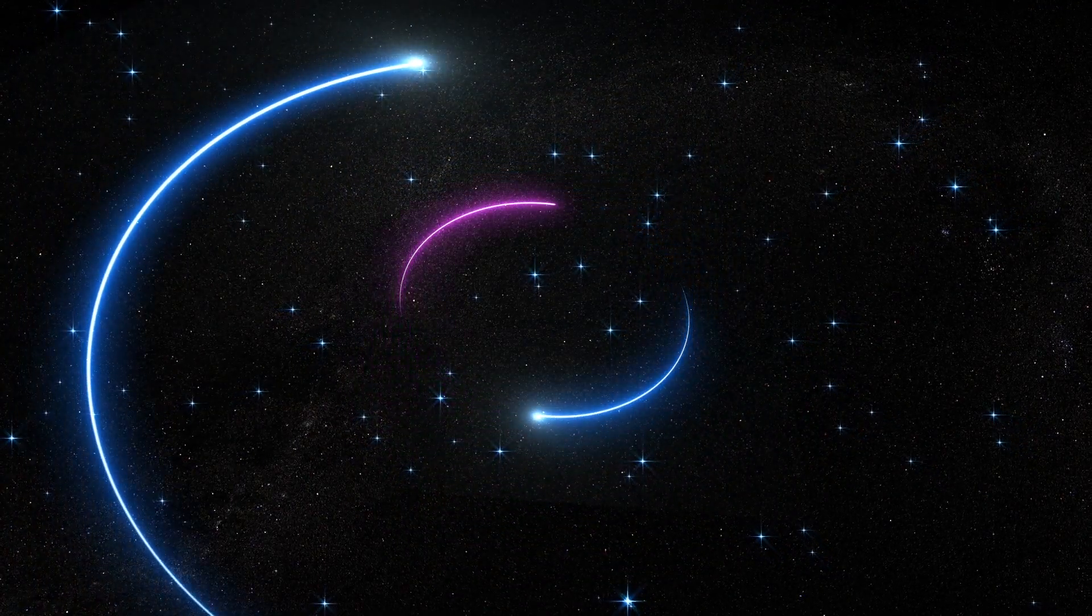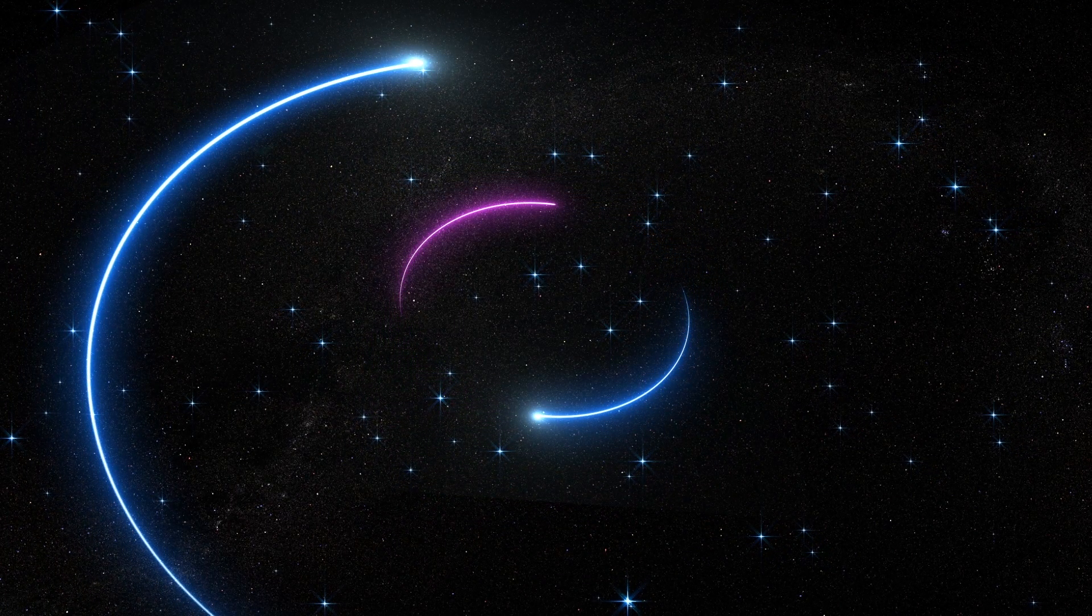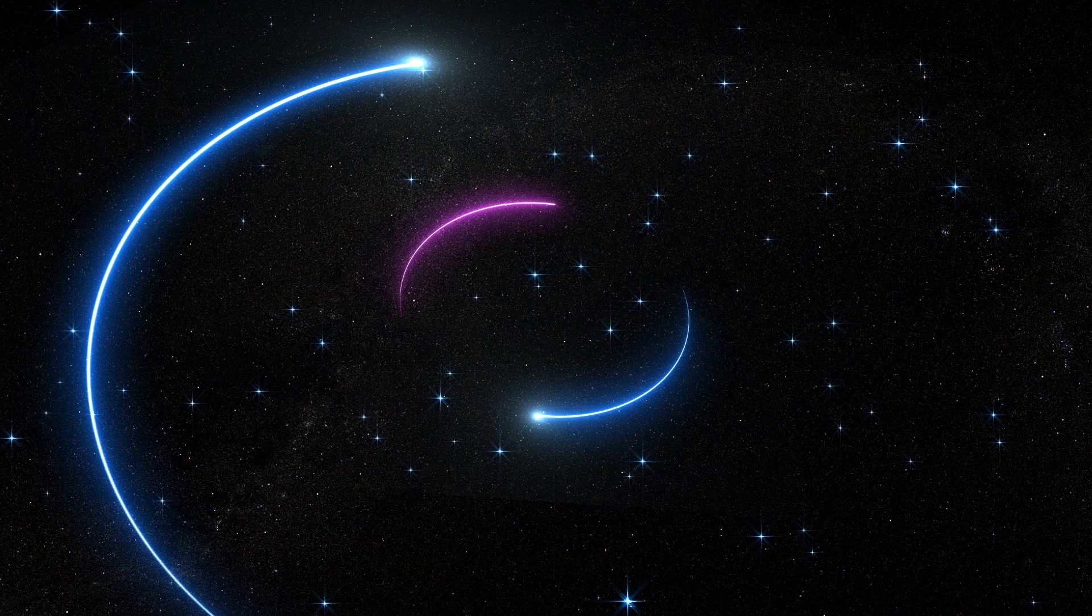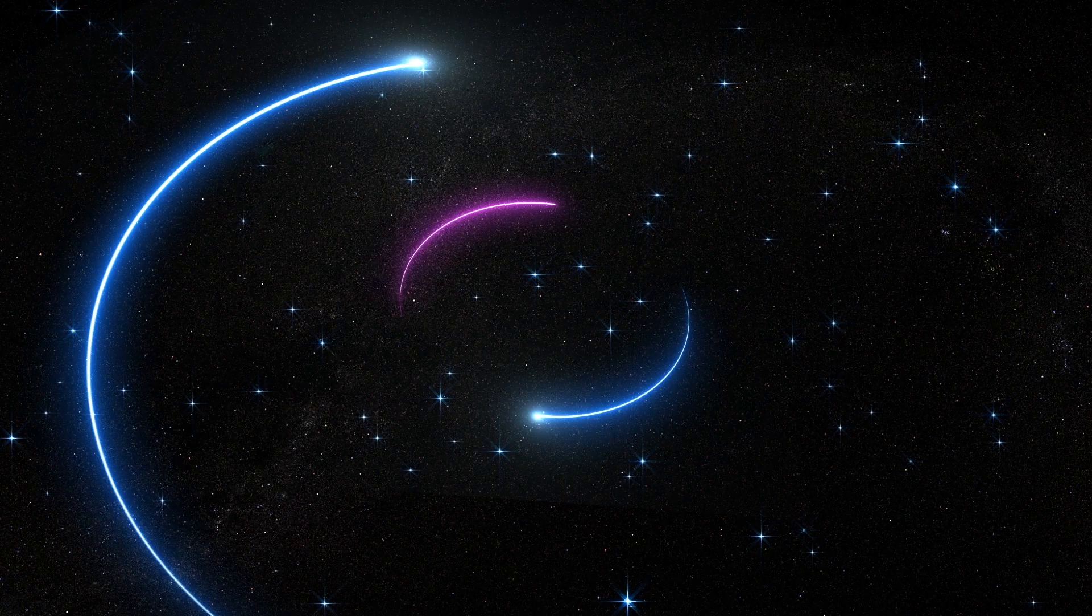According to the paper in Astronomy and Physics, the black hole is 1,000 light years distant in the HR6819 system, which is part of the Constellation Telescopium.